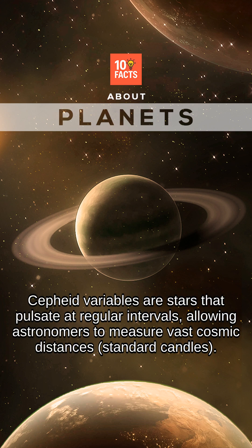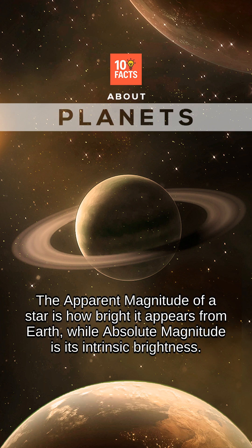Cepheid variables are stars that pulsate at regular intervals, allowing astronomers to measure vast cosmic distances — they are known as standard candles. The apparent magnitude of a star is how bright it appears from Earth, while absolute magnitude is its intrinsic brightness.